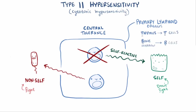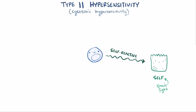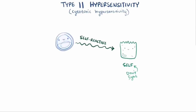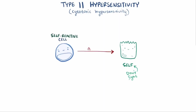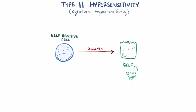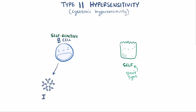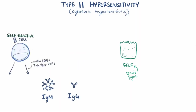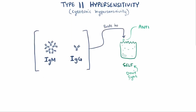This process though isn't perfect, and some self-reactive B and T-cells will escape. These escaped self-reactive cells can then attack healthy tissue, which results in an autoimmune disease. In type 2 hypersensitivity, these escaped self-reactive B-cells become activated and produce IgM, or with the help of CD4-positive T helper cells, IgG antibodies that attach to antigens on host cells.